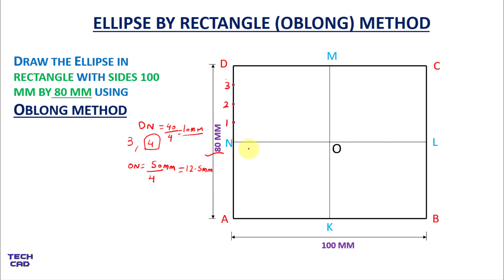Instead, I will draw an inclined line from point N at any angle. Now I will take a compass, open it to a suitable measurement — you can take any measurement — put the steel part on N and mark an arc, giving it the name 1′.